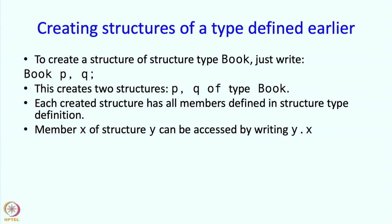Now member X of structure Y can be accessed by writing Y.X. So since we have a structure P and on the last slide, we said that structure type book has members, title and price, we can get to the price member of P by writing P.price. And this statement is storing 399 into that member.